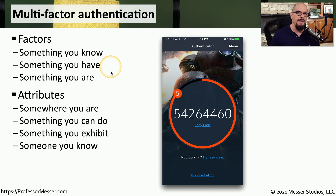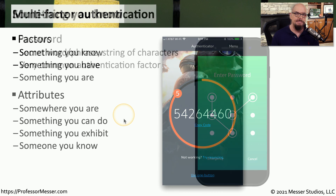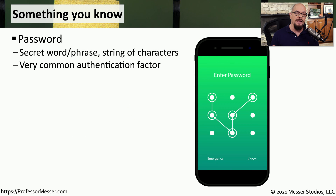An authentication factor is comparing a characteristic to what you know is associated with an individual. An authentication attribute is a bit more fluid — it may not necessarily directly be associated with an individual, but we can include these with other authentication factors to help prove someone's identity.